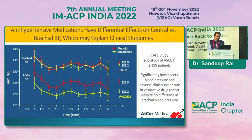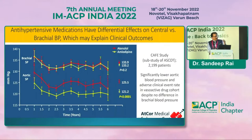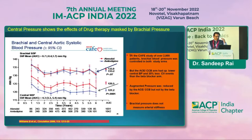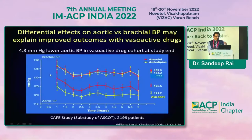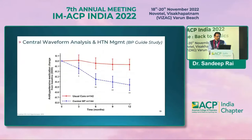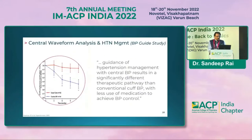The CAFE study with 2,000 patients showed a drug effect: using vasodilatory drugs like perindopril (an ACE inhibitor) and amlodipine — compared to atenolol and a diuretic — in patients with the same brachial blood pressure, you not only decrease central aortic pressure more but also reduce cardiovascular events by 30%. The BP-GUIDE study also shows that guidance of hypertension management with central BP results in a significantly different therapeutic pathway than conventional cuff BP.